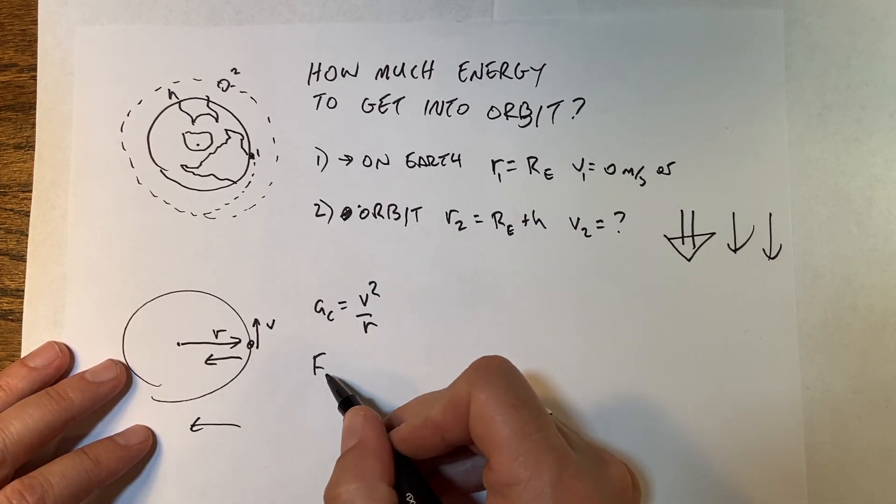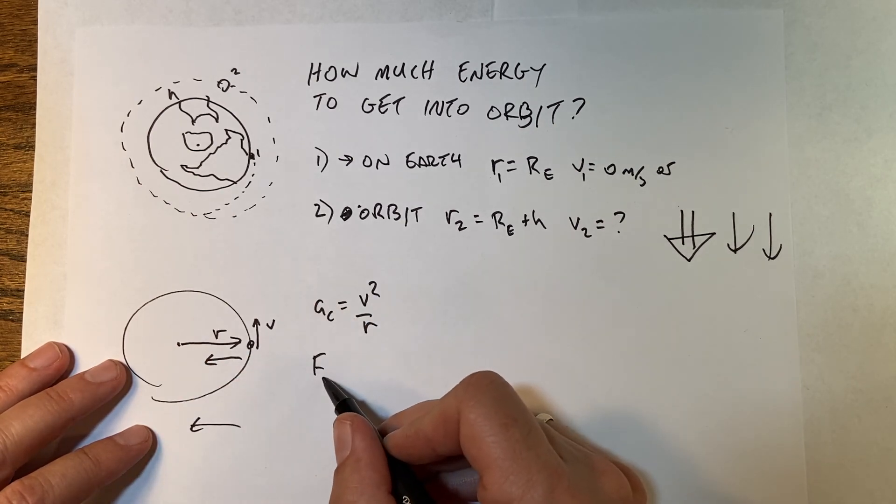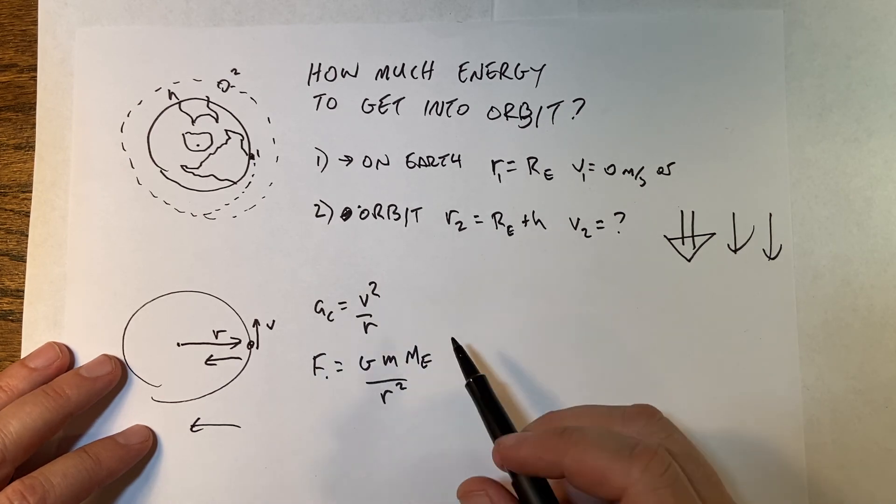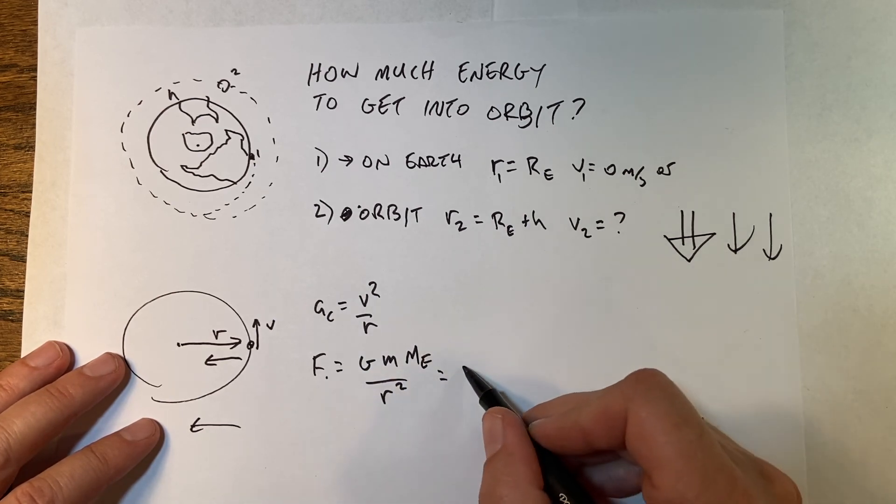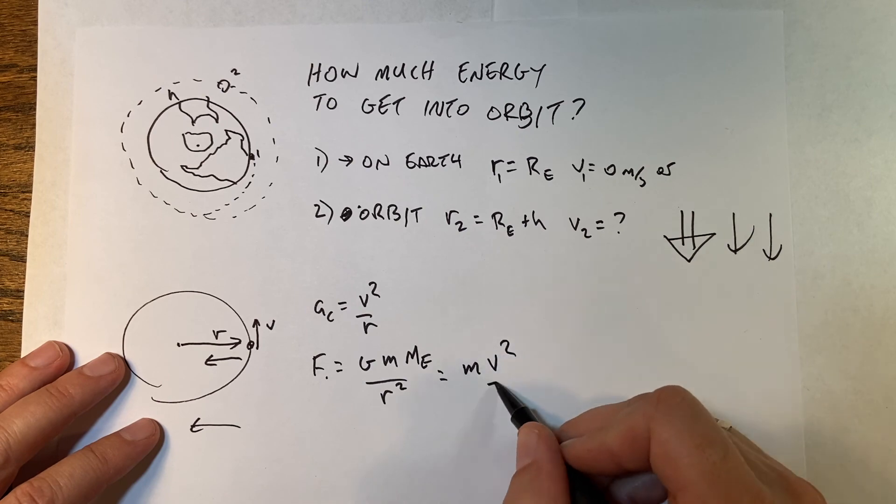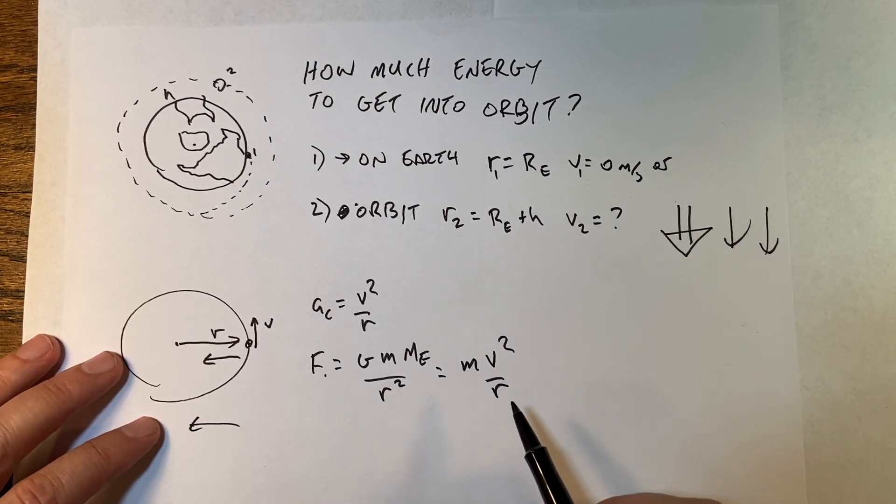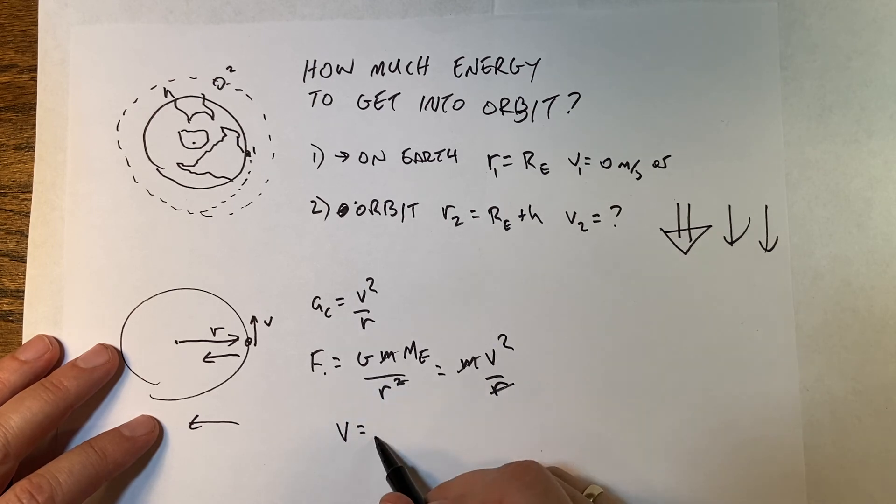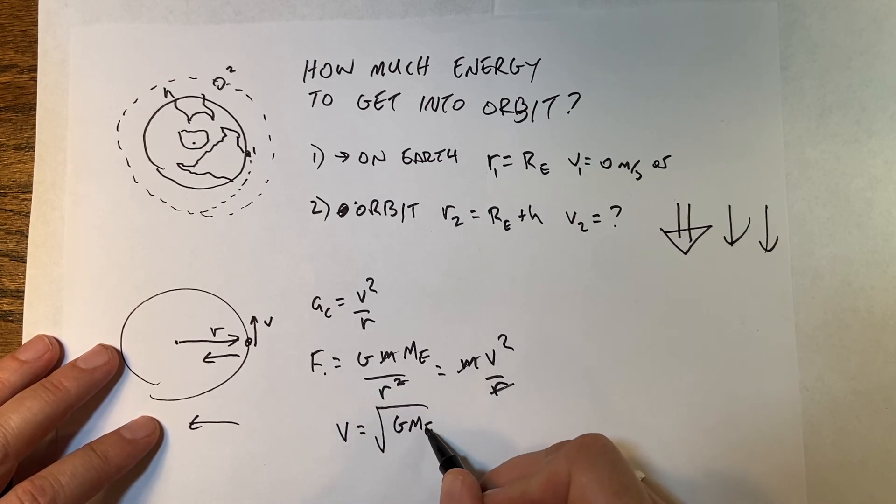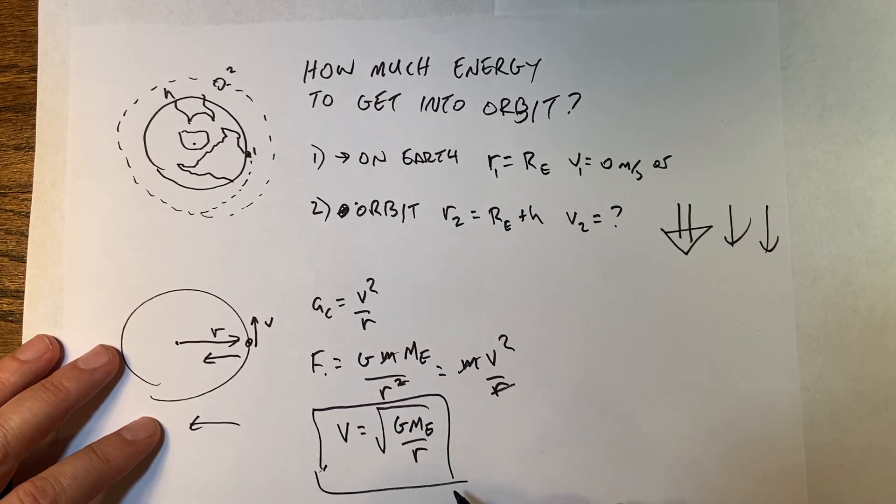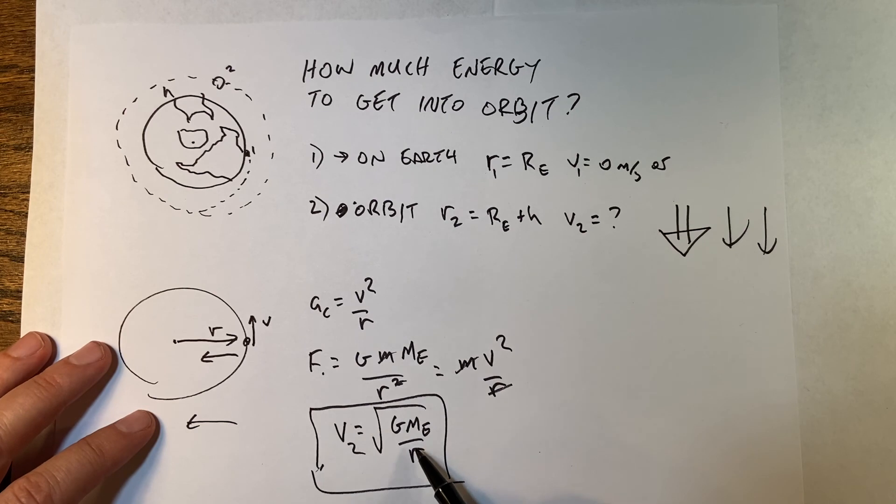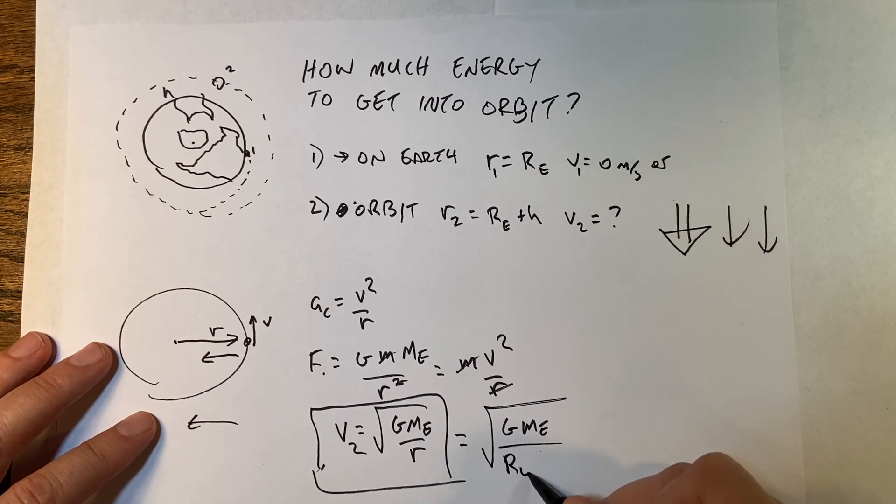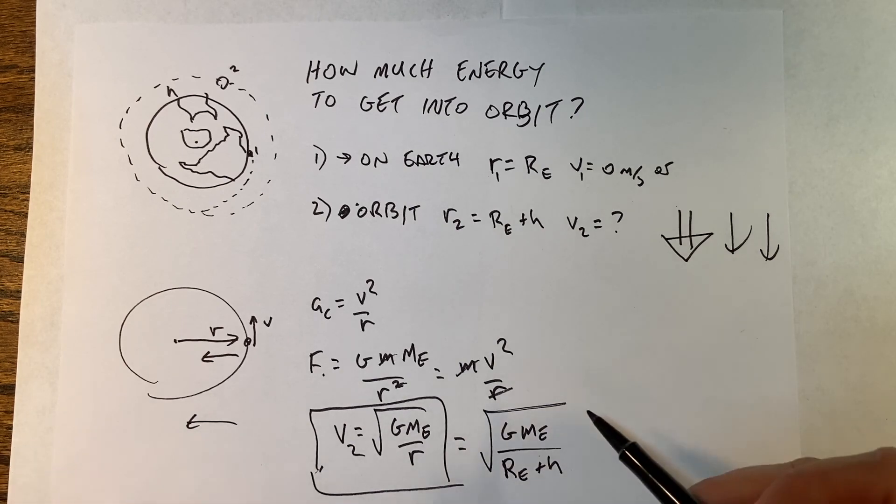Let's calculate the velocity it needs to move in orbit. Here I have a spacecraft and this is the center of the earth with radius r and velocity v. The centripetal acceleration is v squared over r. There's also a gravitational force, f equals g times mass of the object times mass of the earth over r squared. This force equals m times ac, which is v squared over r. Solving for v, the mass cancels, and I get v equals the square root of g times me over r.